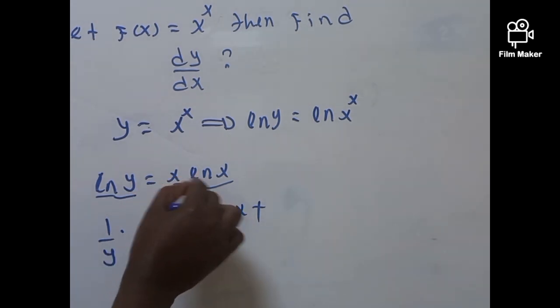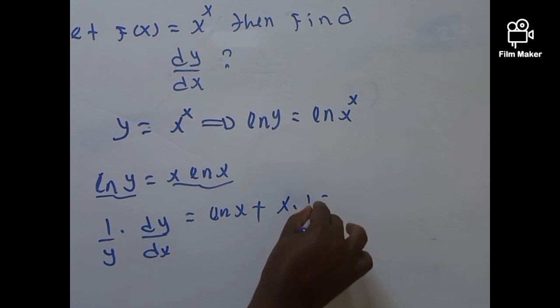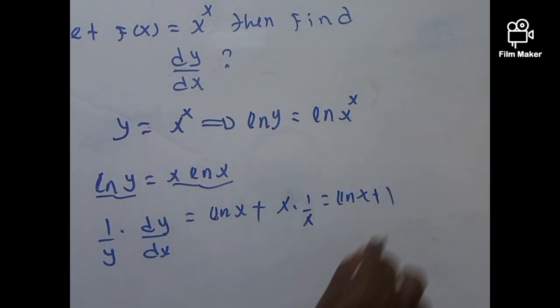The derivative of X ln of X is 1 over X, X times 1 over X, that's going to be ln of X plus 1.